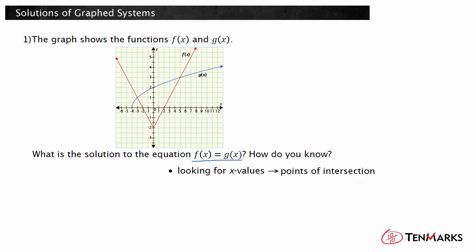In the graph, you can see that the functions f of x and g of x intersect at the points negative 3, 1 and at 5, 3. At these two points, the x values are the same and the outputs are the same. Remember, the solution to the equation f of x equals g of x will be the x values. The x values of these points are negative 3 and 5, so the solutions are x equals negative 3 and x equals 5.